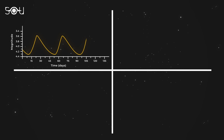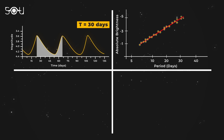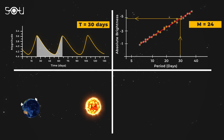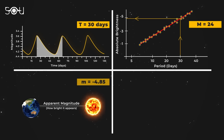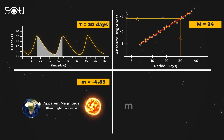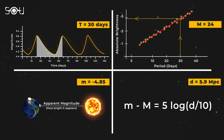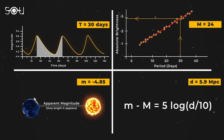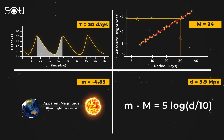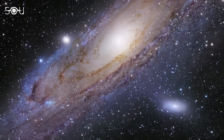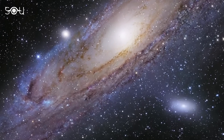So first, we observed the pulsation period of the star. Then we used the period-luminosity relation to determine the star's absolute brightness. After that, using our telescopes, we measured how bright the star appears from Earth. Finally, using a simple equation, we determined how far the star lies from us, which turns out to be 5.9 megaparsecs. In this way, using a single star of a special class, we have found the distance to the galaxy in which it lies.